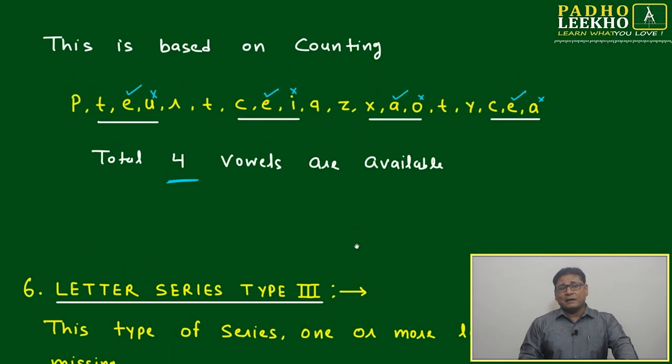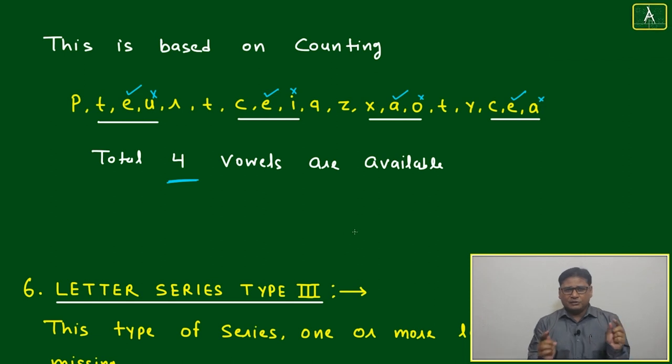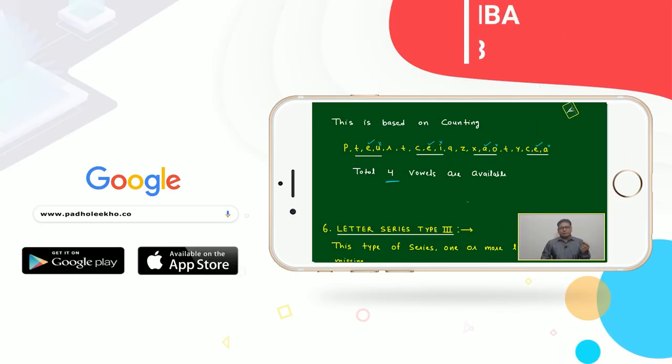Sometimes counting mistakes may happen, so be careful. The letters will be small or the series will be big. Usually it's just one mistake - not a huge difference. Maybe you counted five when the actual answer is six, or you over-counted.